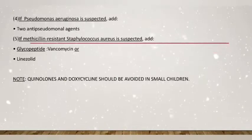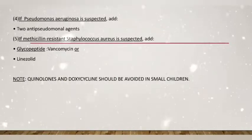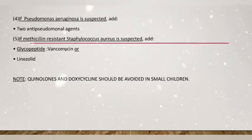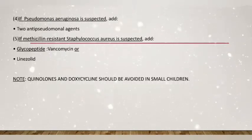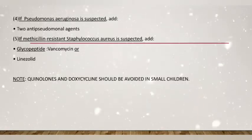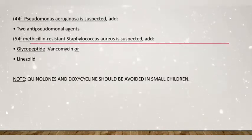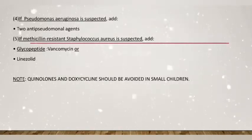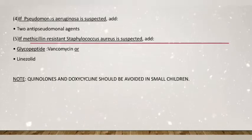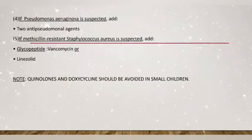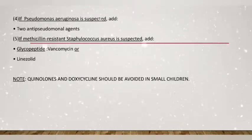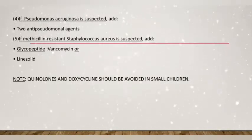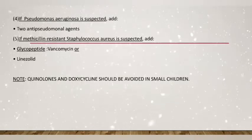If Pseudomonas aeruginosa is suspected — in patients with a history of steroid use or broad-spectrum antibiotic use — two anti-pseudomonal agents should be added to the therapy. If methicillin-resistant Staphylococcus aureus (MRSA) is suspected, a glycopeptide such as vancomycin (drug of choice) or linezolid should be added. One important note: quinolones and doxycycline should be avoided in small children.